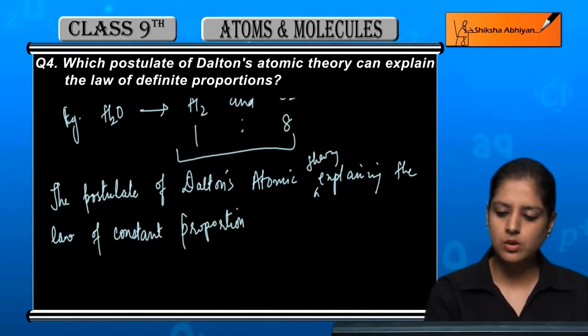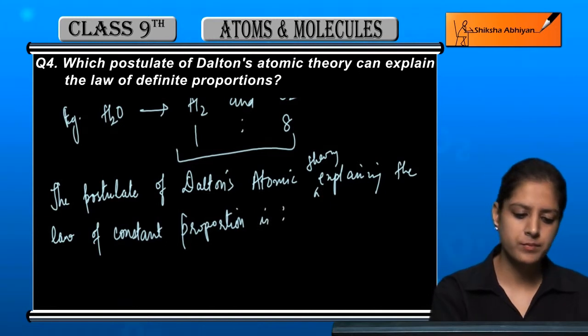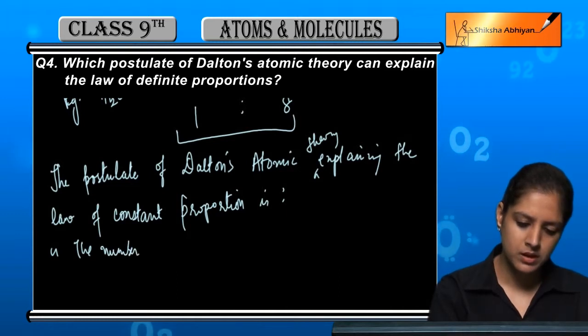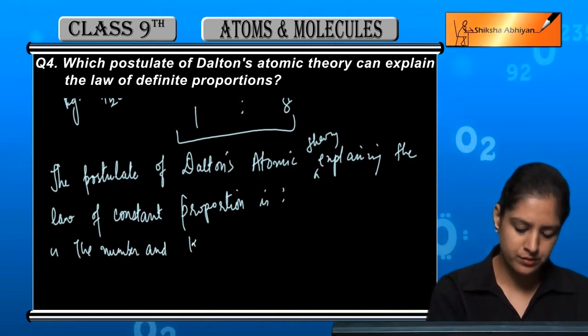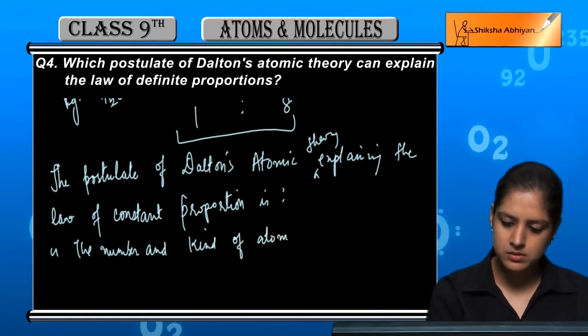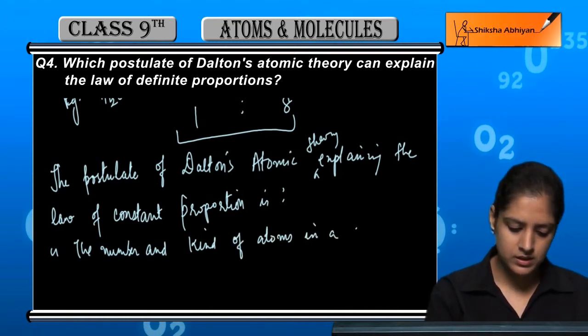ठीक है तो वो जो postulate है: it is the number and kind of atom in a given compound is fixed.